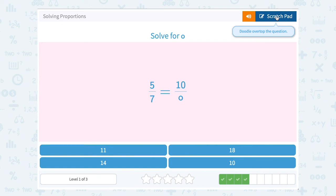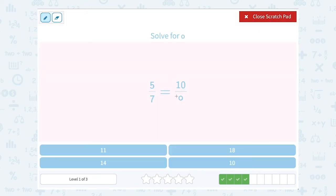Solve for o. 5 over 7 equals 10 over o. We're going to cross multiply 5 times o. Be really careful. I'm going to write this little so we know it's not a zero, it's an o. And 7 times 10 gives us 70.